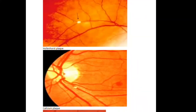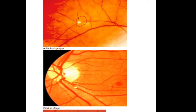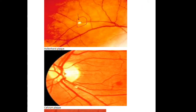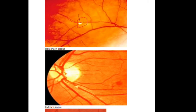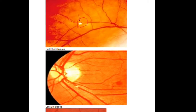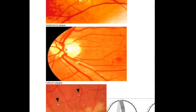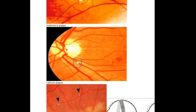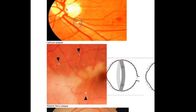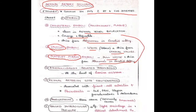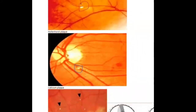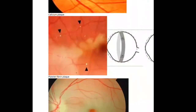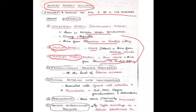The first emboli type is also called Hollenhorst emboli — cholesterol emboli — seen mainly at the bifurcation of the retinal artery. The second is calcium plaque, which is slightly white in color. The third is platelet-fibrin plaque, which is more dull white compared to calcium emboli. These three emboli are the main causes of retinal artery occlusion.